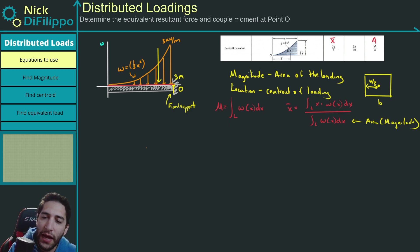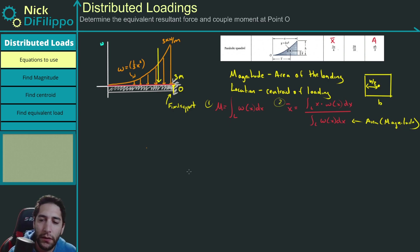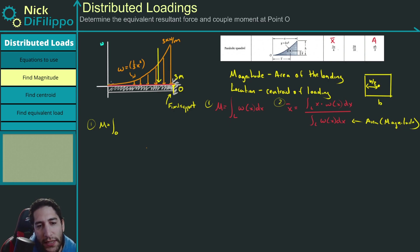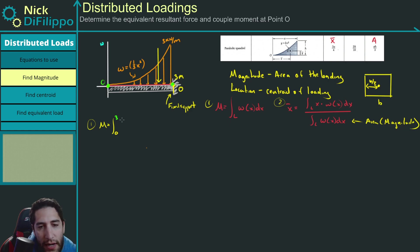I'm going to do this problem two ways: first by computing using integration, then checking it with the table. The magnitude is equal to the integral from zero to three of w dx, which is the integral from zero to three of one-third x squared dx.